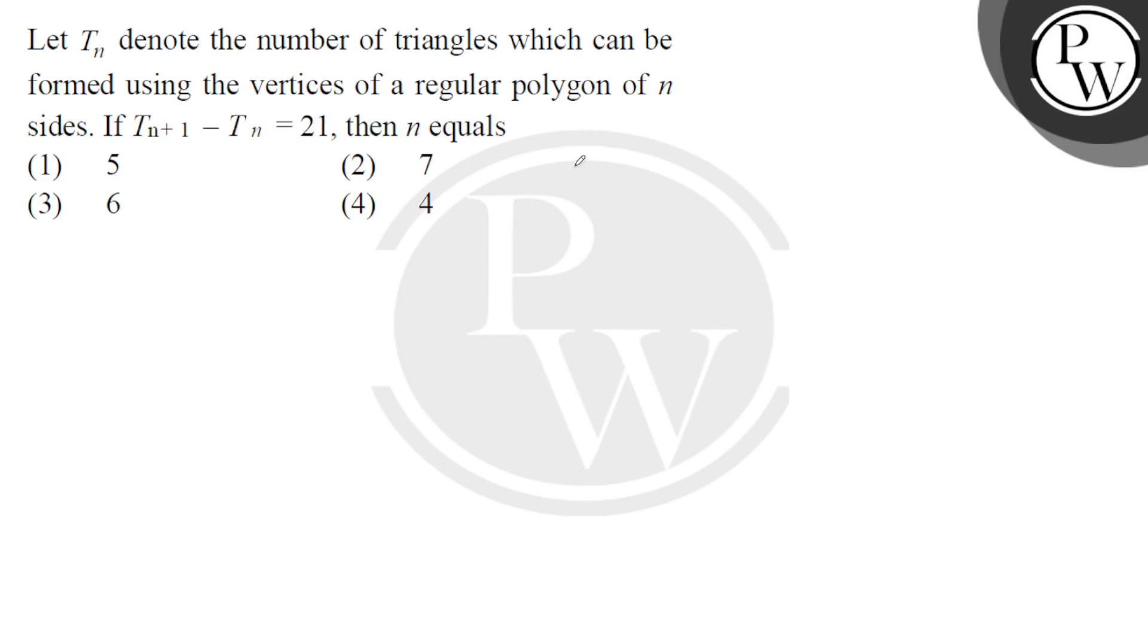If we talk about T_(n+1), so that is n+1 with 3 vertices, so it can be (n+1)C3 minus nC3 and that equals 21.